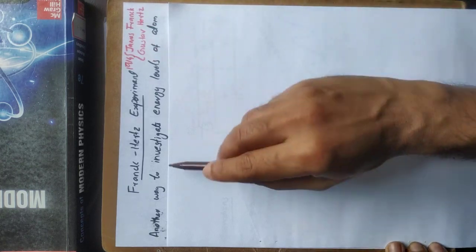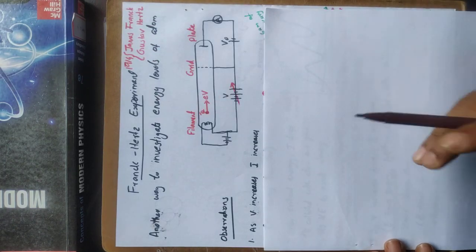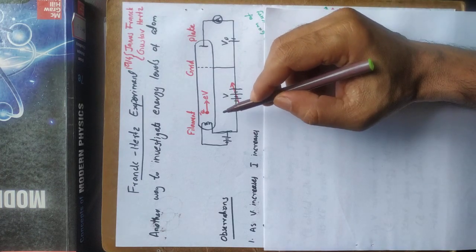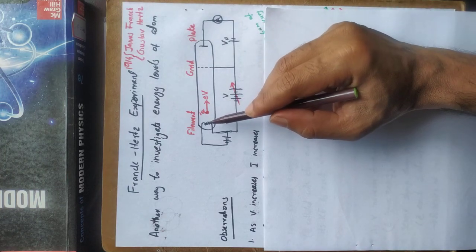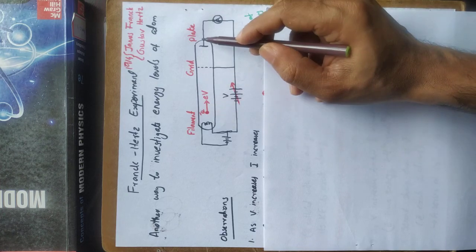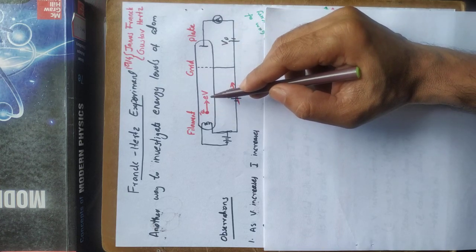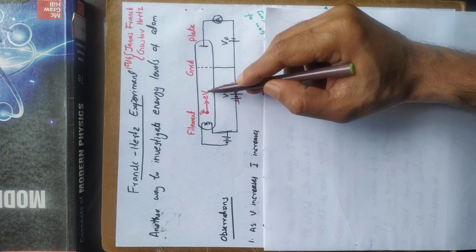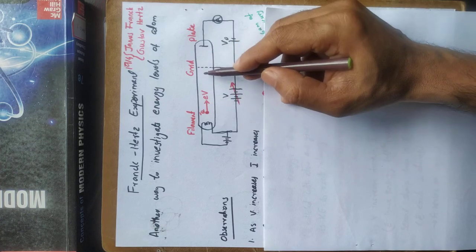This is another way to investigate the energy levels of an atom. This is the experimental arrangement. It consists of a glass tube filled with atoms to be studied in vapor form — mercury, sodium — in vapor form inside a glass tube.